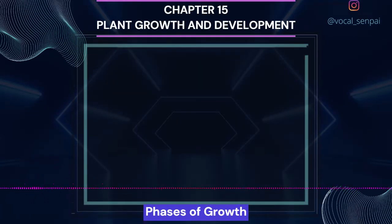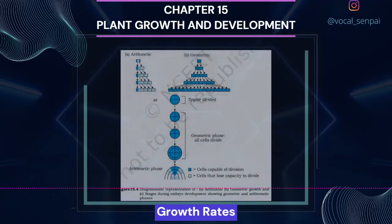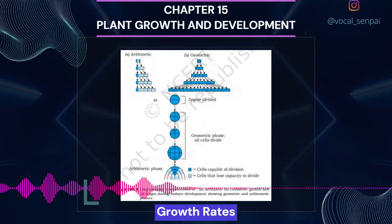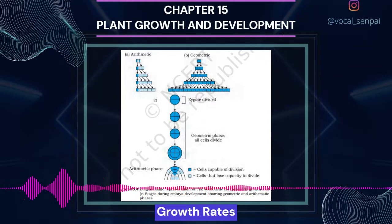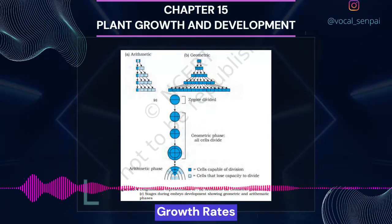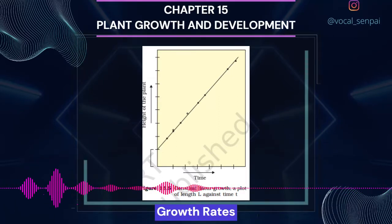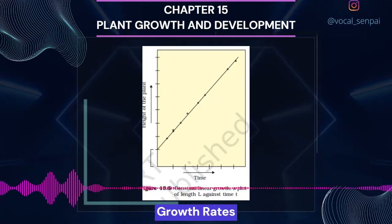Growth Rates. The increased growth per unit time is termed as growth rate. Thus, rate of growth can be expressed mathematically. An organism or a part of the organism can produce more cells in a variety of ways. The growth rate shows an increase that may be arithmetic or geometrical, figure 15.4. In arithmetic growth, following mitotic cell division, only one daughter cell continues to divide while the other differentiates and matures. The simplest expression of arithmetic growth is exemplified by a root elongating at a constant rate. On plotting the length of the organ against time, a linear curve is obtained. Mathematically, it is expressed as Lt = L0 + RT, where Lt is the length at time t, L0 is the length at time 0, and R is the growth rate elongation per unit time.